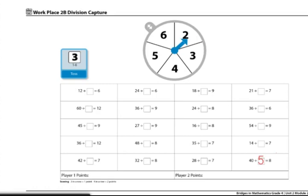Players will try to capture three or four boxes in a row either horizontally, vertically, or diagonally. They'll continue until the board game is filled or neither player can use the numbers that are spun to make three in a row.